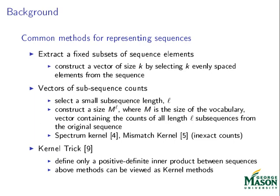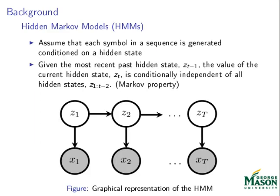At the core of our method is the hidden Markov model. Hidden Markov models assume that each observed symbol is generated from a hidden state. Each of these hidden states is independent of the previous hidden states, given the hidden state immediately preceding it. This independence assumption allows for a series of efficient inference methods over the model.